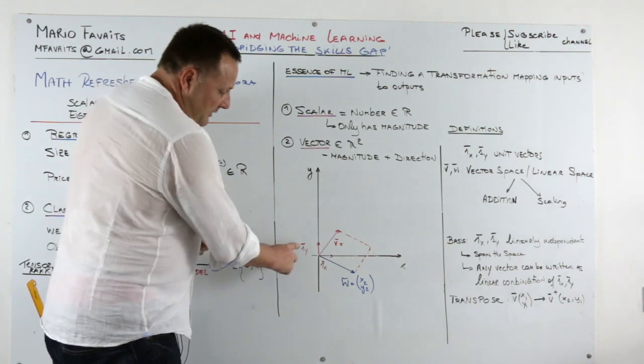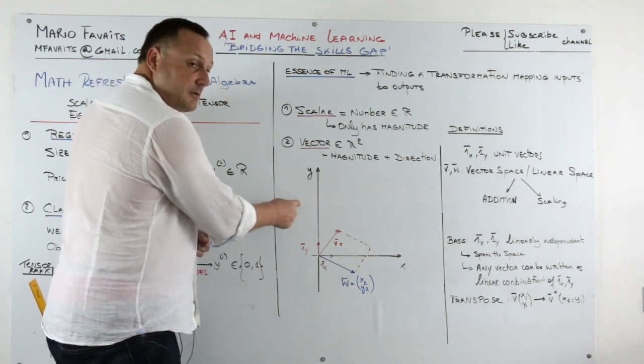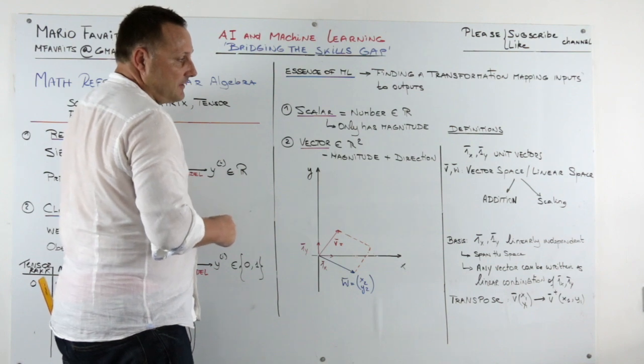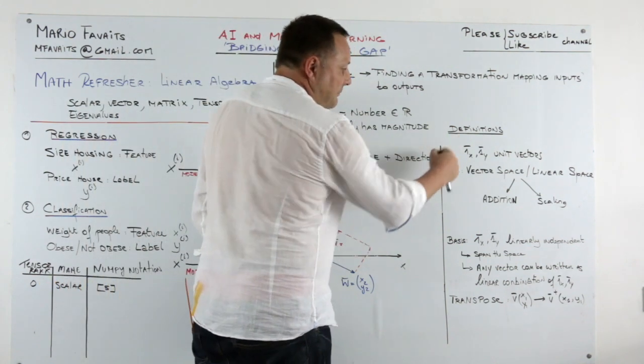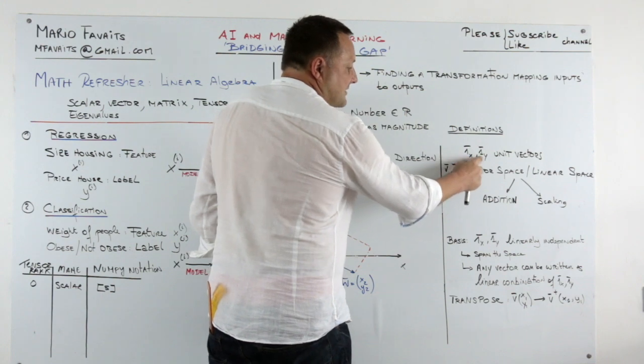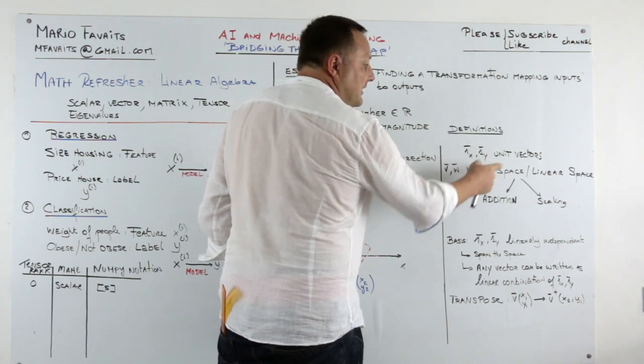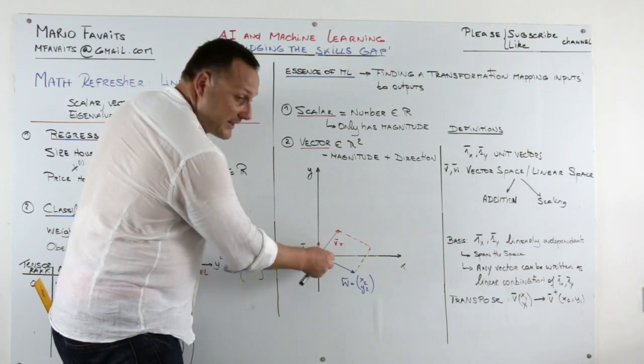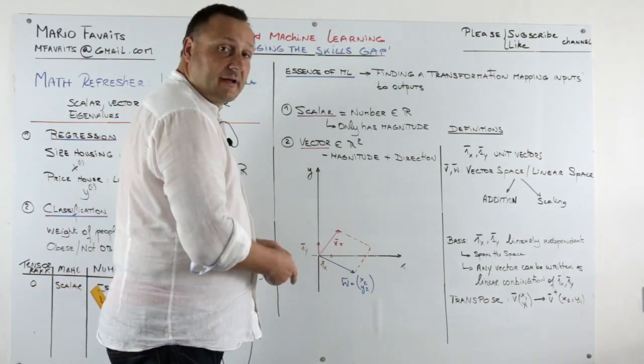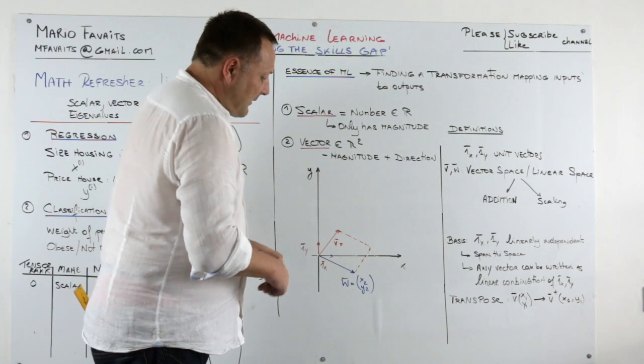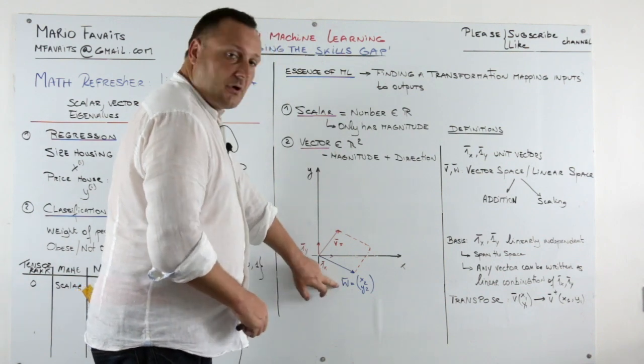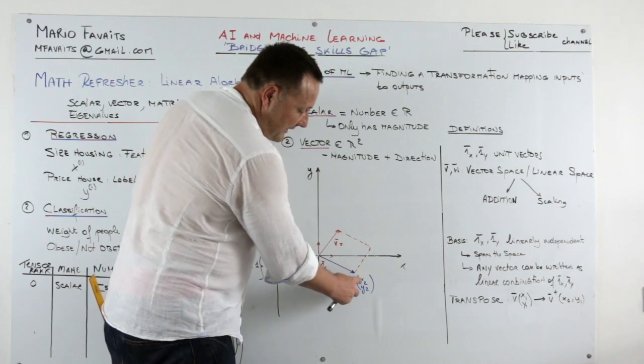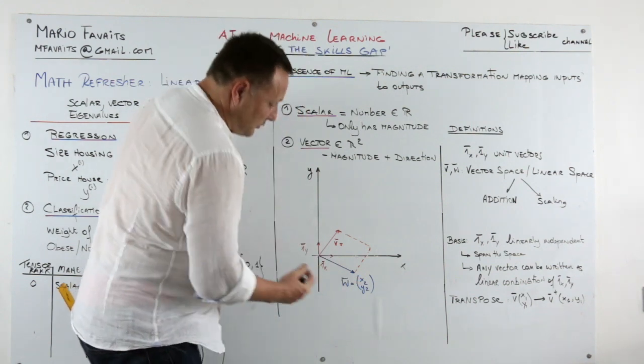You see the notation we will use for vector is we put a little bar on top of the number. Here, for example, definitions. Definitions 1x, 1y are unit vectors. These are these little lines here with the arrow. These are the unit vectors. Now I drew two vectors. A vector w here. It's a column vector. So it has components x2, y2. How do I find that?